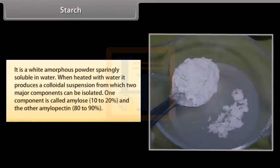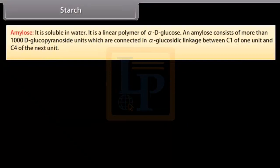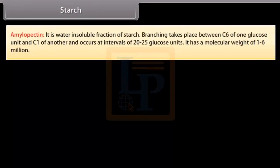Starch is a white amorphous powder, sparingly soluble in water. When heated with water, it produces a colloidal suspension from which two major components can be isolated: amylose and amylopectin. Amylose is soluble in water and is a linear polymer of alpha-D-glucose consisting of more than 1,000 D-glucopyranose units connected by alpha-glucosidic linkage between C1 of one unit and C4 of the next. Amylopectin is the water-soluble fraction of starch; branching takes place between C6 of one glucose unit and C1 of another, occurring at intervals of 20 to 25 glucose units. It has a molecular weight of 1 to 6 million.